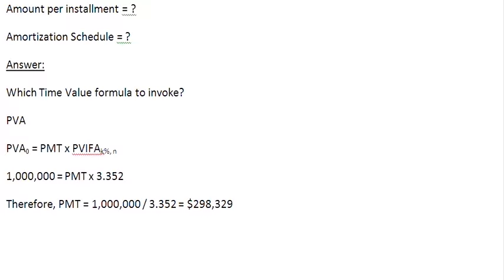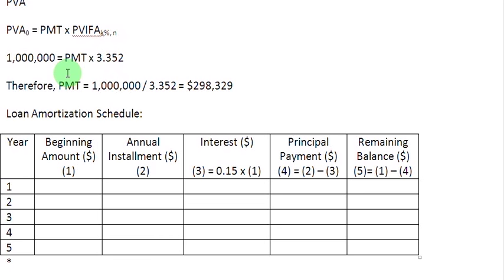Now let us prepare an amortization schedule. For that we make a table. In the first column we write the number of years: 1, 2, 3, 4, and 5. The next column shows the beginning amount of the loan, followed by a column for annual installments, another column for interest payments, another for principal repayment, and finally the remaining balance.